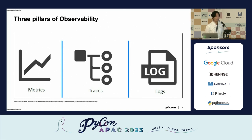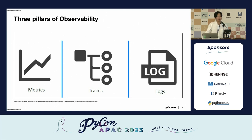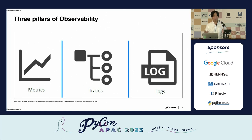In software observability we often talk about three telemetry types: metrics, logs, and traces. Let me do a quick survey — how many people have heard about logs and also created logs within your project? If you've already done that, please raise your hand. I think most people are doing that. Just keep your hand because I have a few more questions.